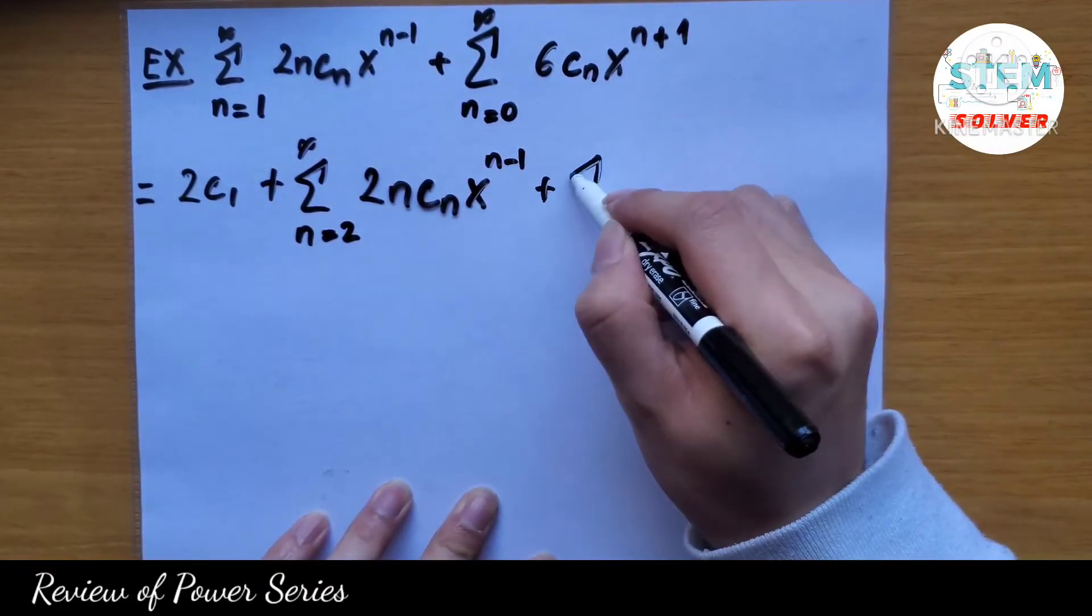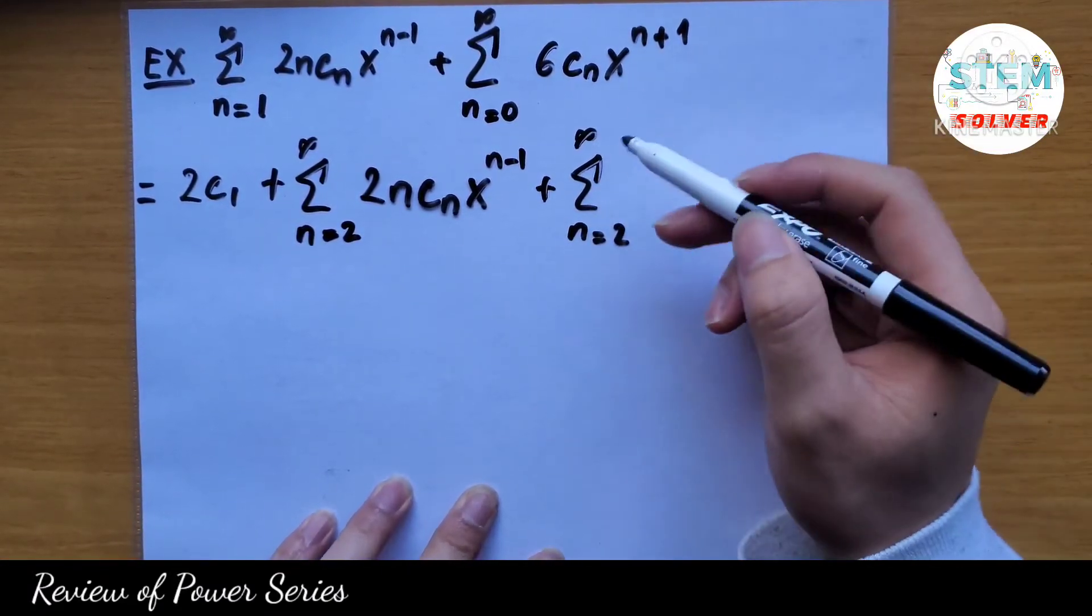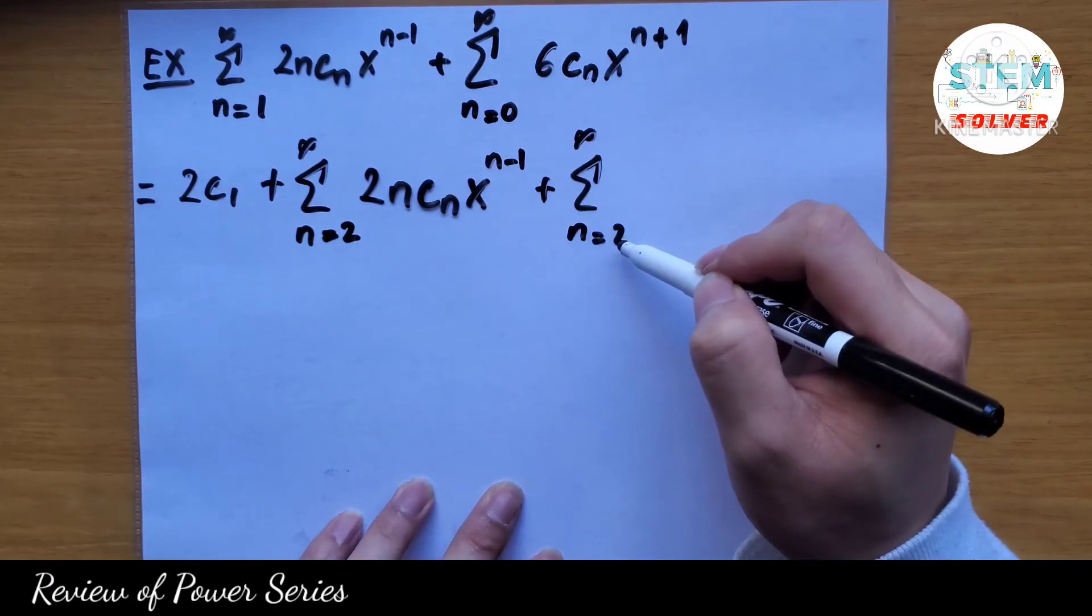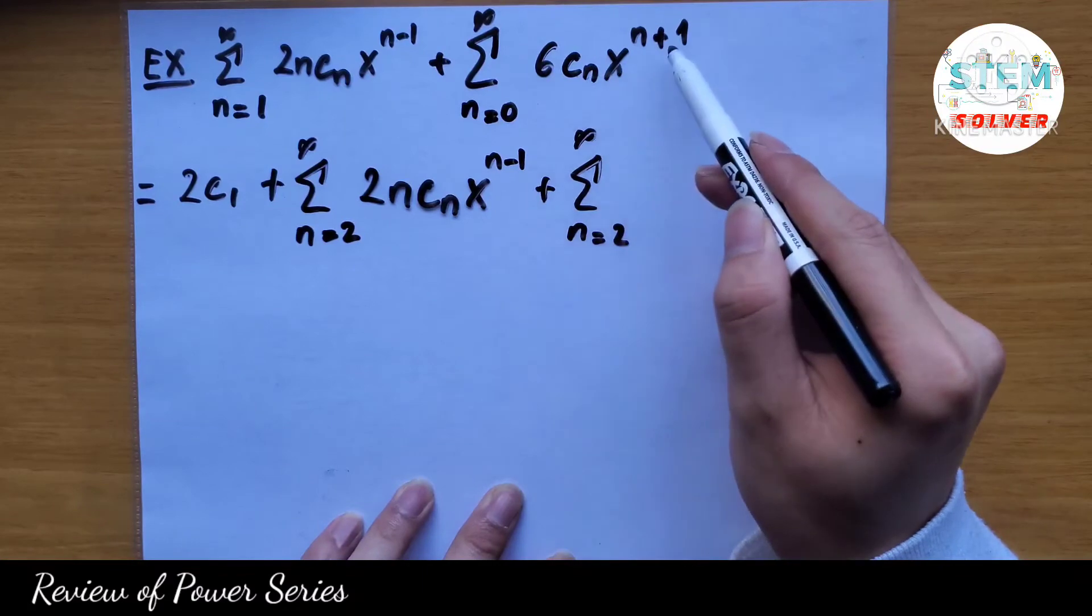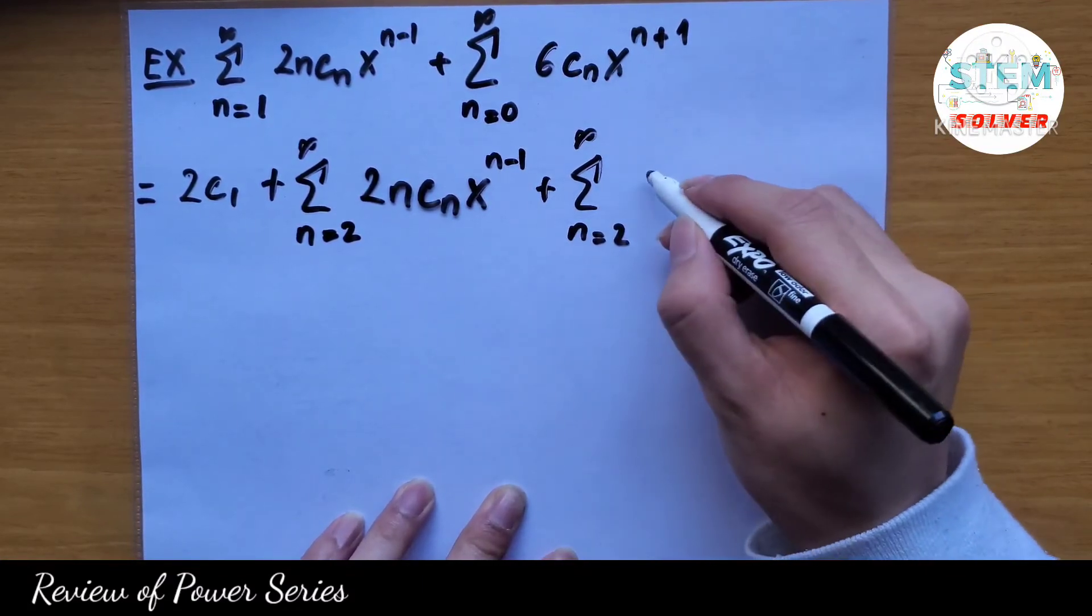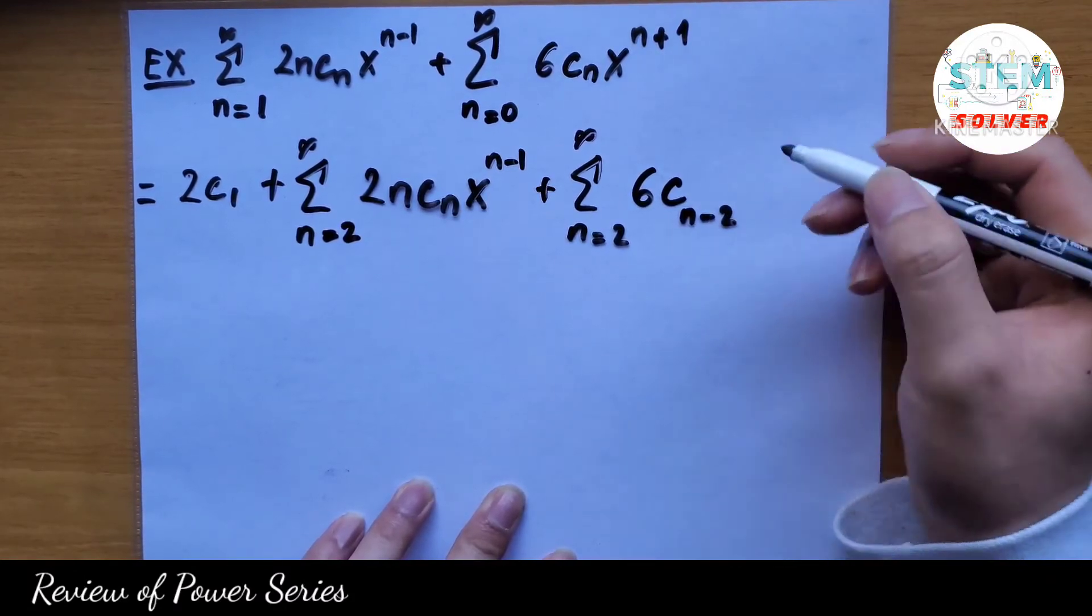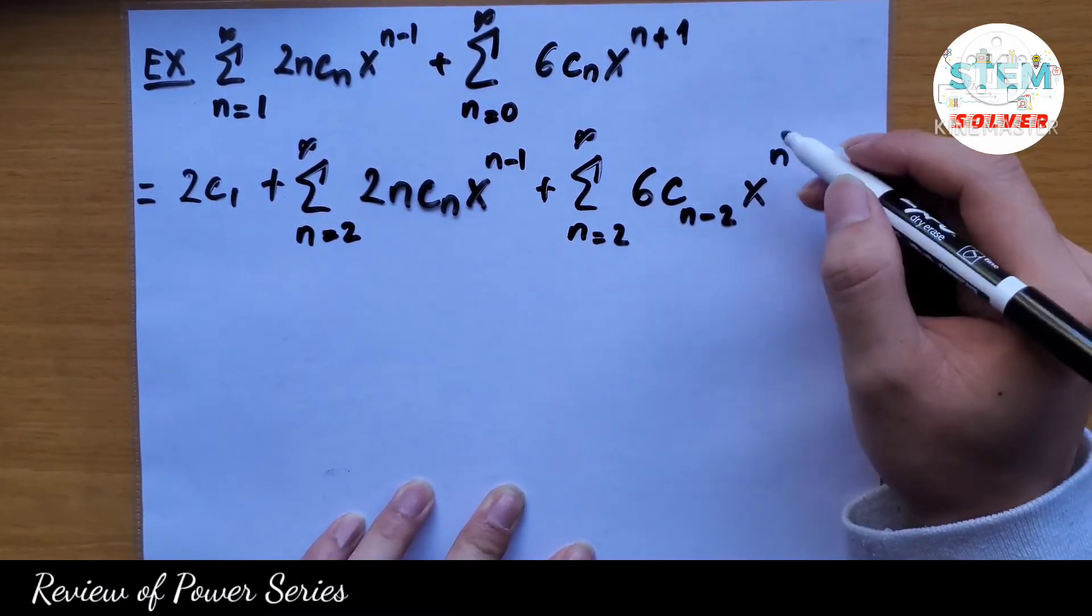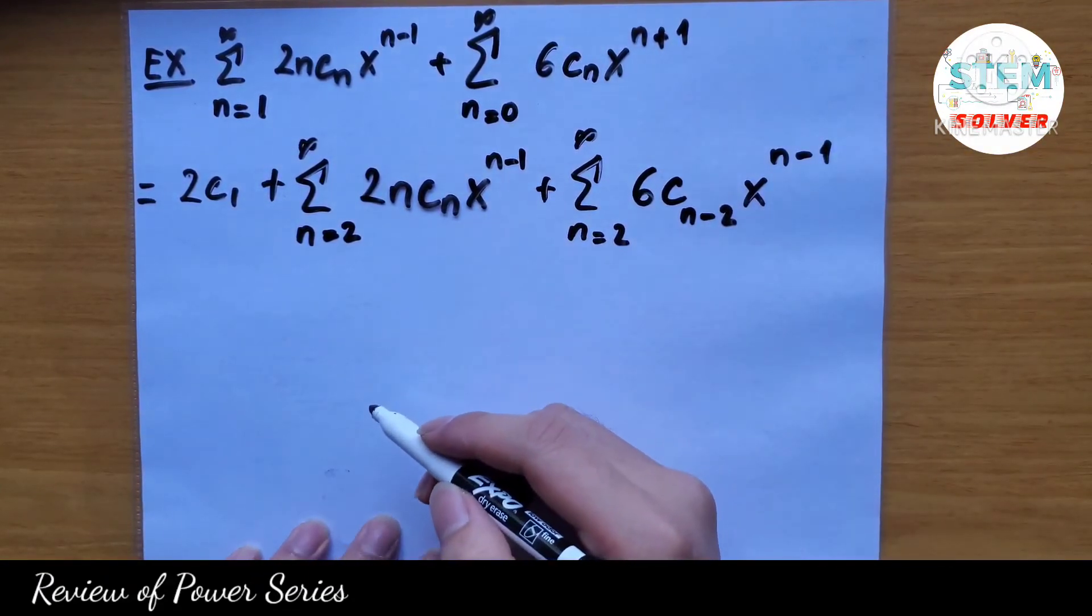So I have plus series from n equal 2 to infinity. Remember when I increase this by 2, I'm gonna do the opposite to every single n inside here. That means I'm gonna have 6 cn minus 2 x to the n plus 1 minus 2, which is n minus 1.